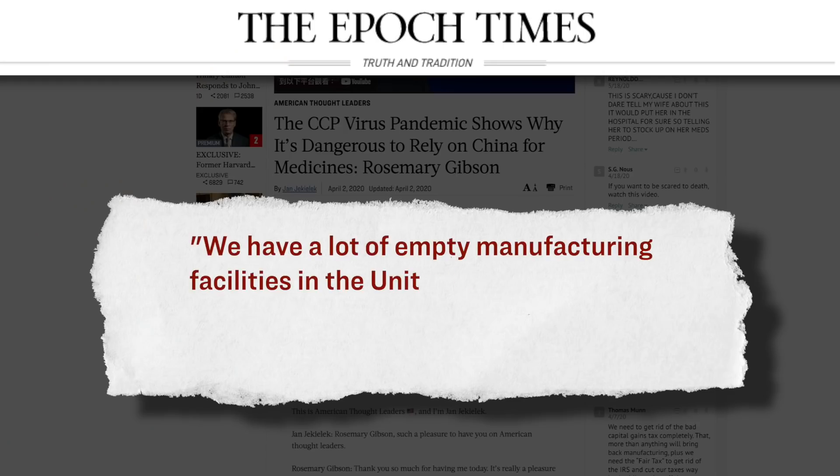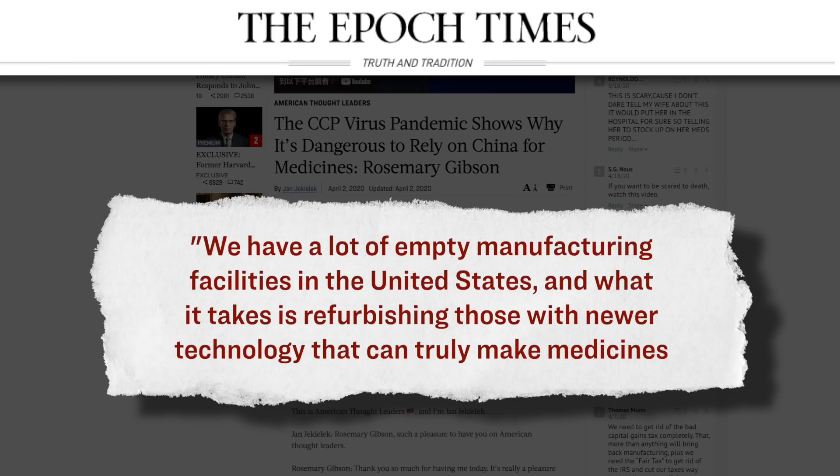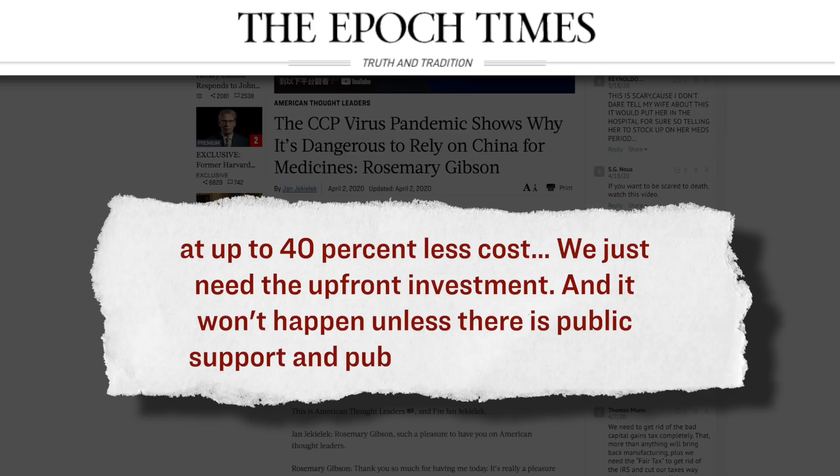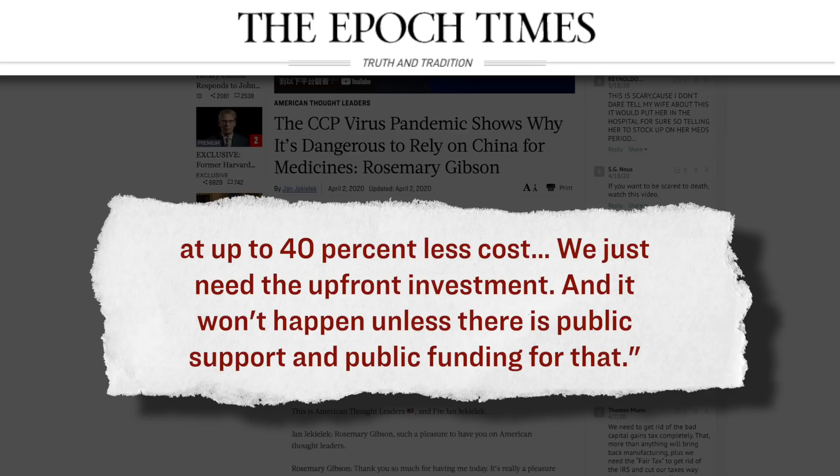This problem was identified long before the pandemic, but with the supply chain crunch that we are experiencing now, the medication shortage has become exacerbated, just like shortages of everything else. In terms of a solution, Ms. Gibson suggests that we stop playing around and bring production back home. Here's what she said: 'We have a lot of empty manufacturing facilities in the United States, and what it takes is refurbishing those with newer technology that can truly make medicines at up to 40% less cost. We just need the upfront investment, and it won't happen unless there is public support and public funding for that.'